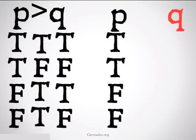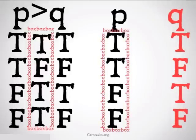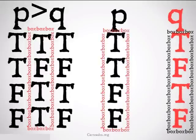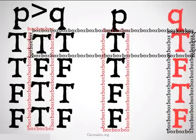We fill in truth tables under these. We take a look at the central, most important columns of each of the two premises as well as the conclusion, and we discover that in the only case in which the two premises are true, the conclusion is also true. So this is a valid form of argument.